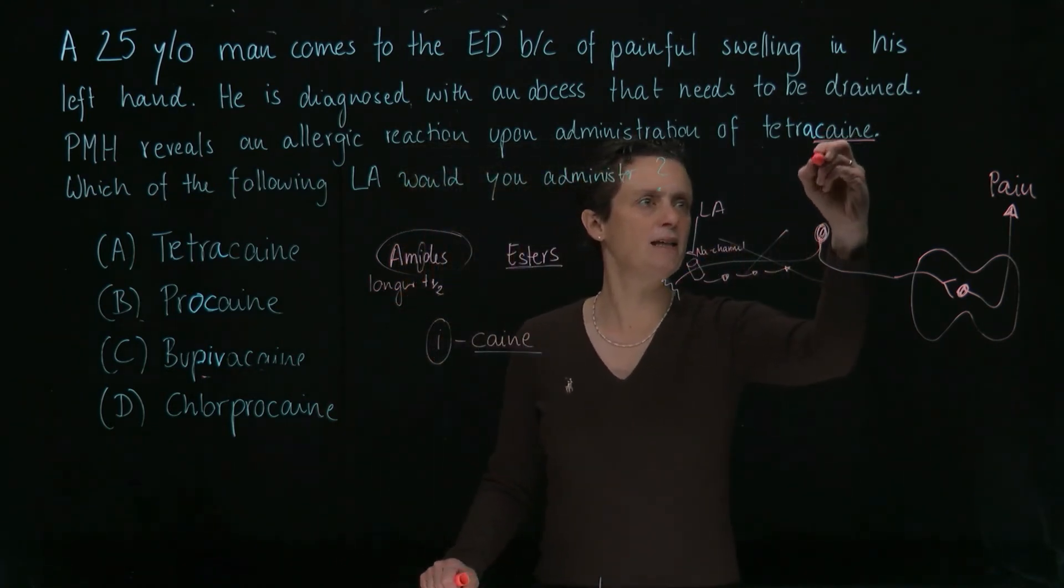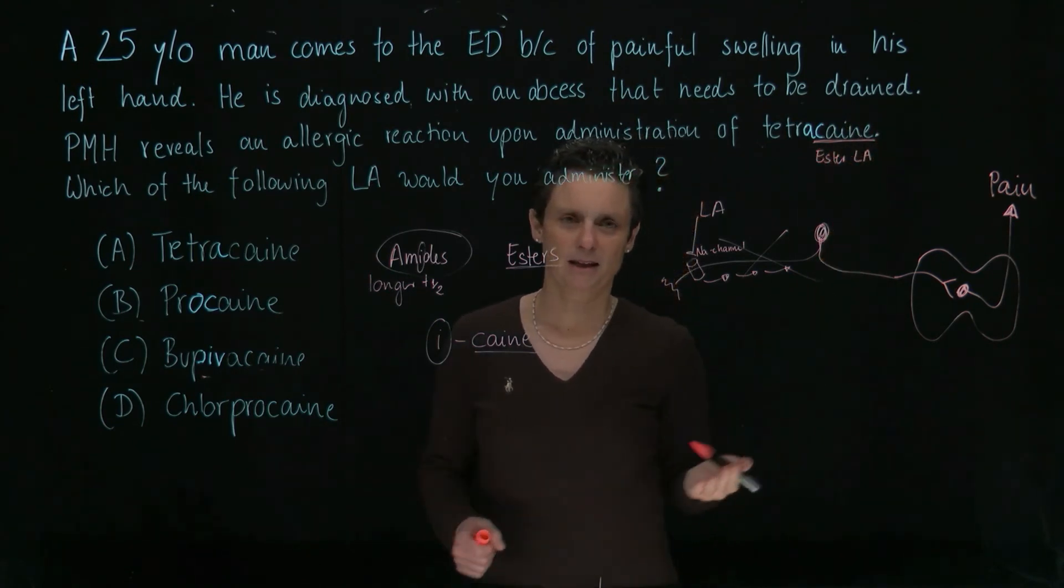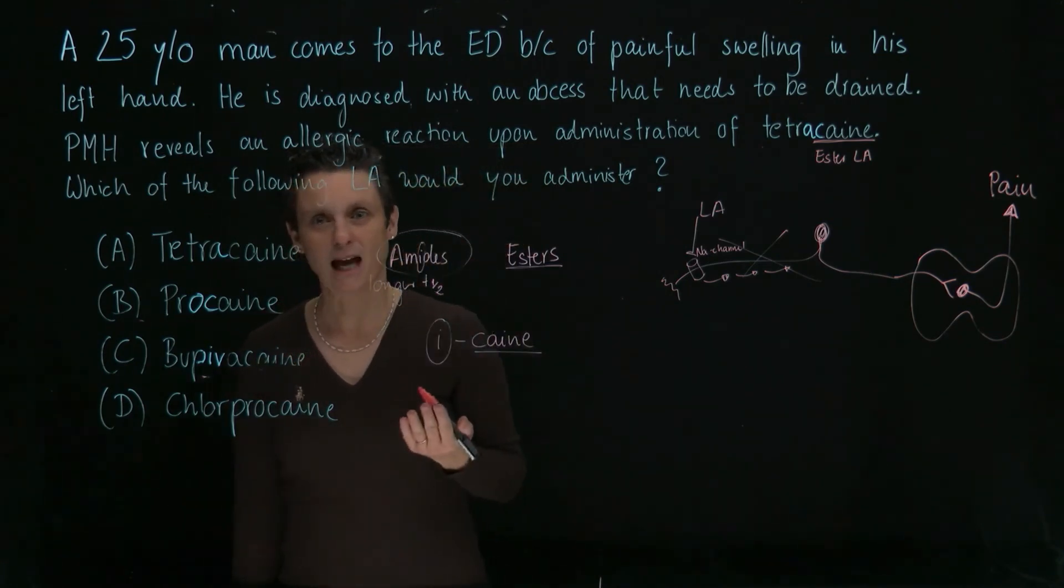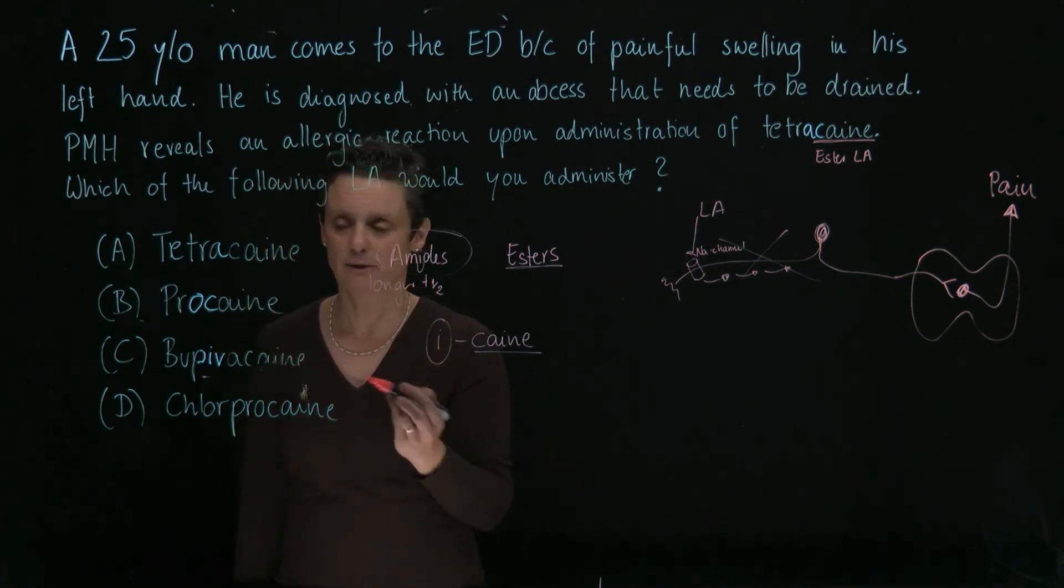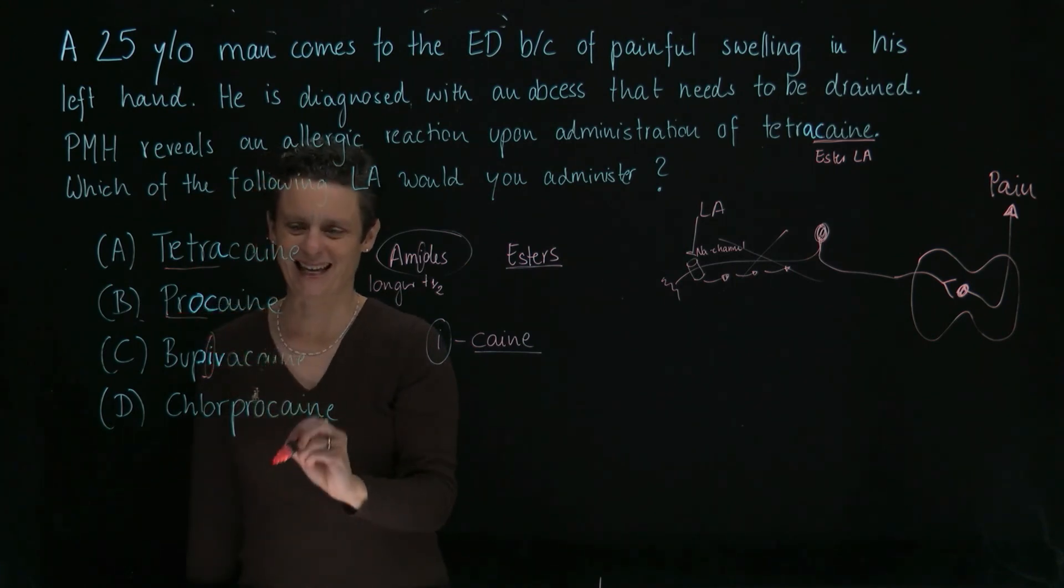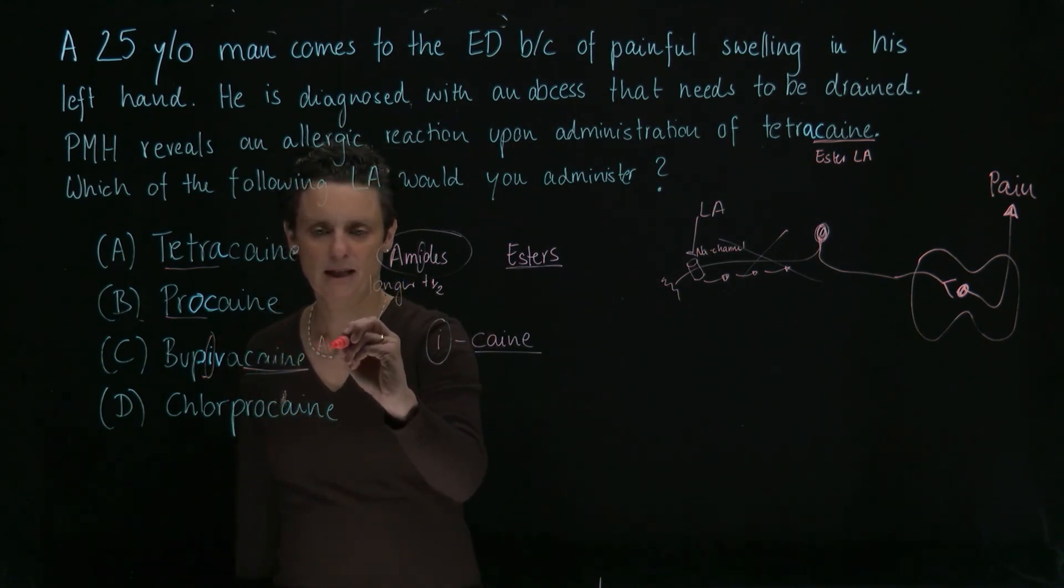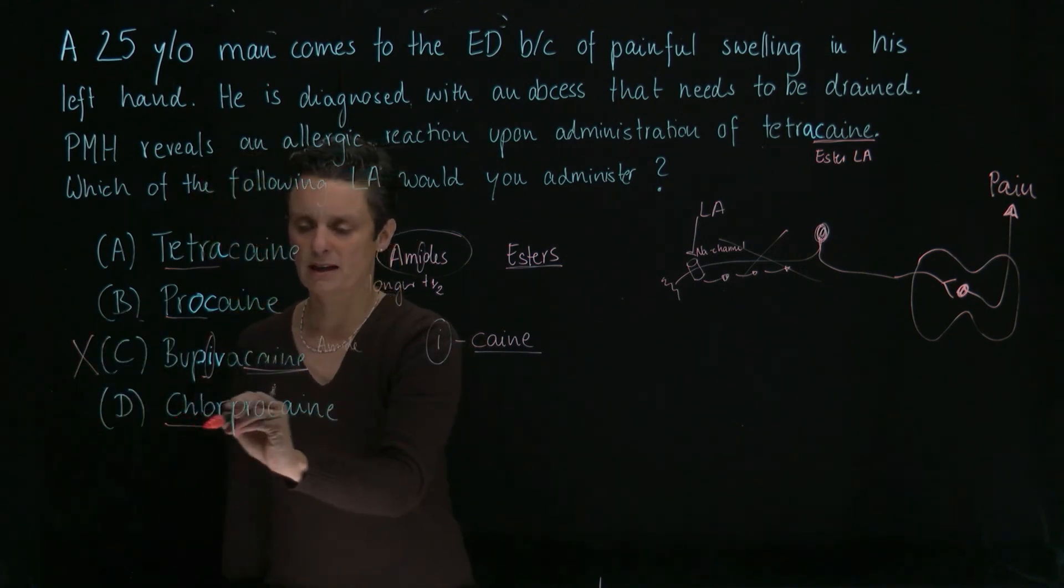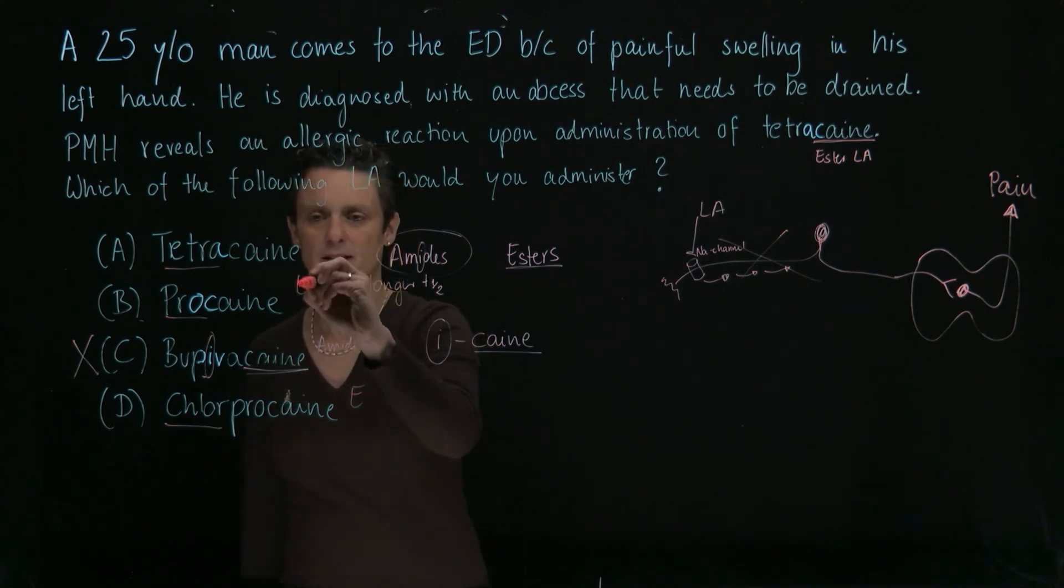So here tetracaine is actually an ester local anesthetic, and that's also very typical that people develop allergies against esters. And let's look here. We would like to give our patient an amide local anesthetic. So do we find any caine with an i in front of the caine? Not for tetracaine, not for procaine, but here bupivacaine has an i in front of the caine. So that would be a good one to give. That's an amide and that's the correct answer. And chlorprocaine again has no i in front of the caine and is an ester. So these are all esters.